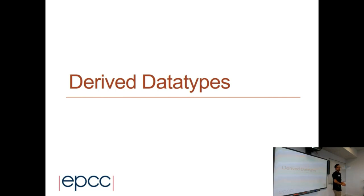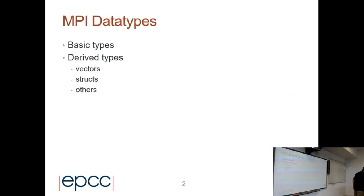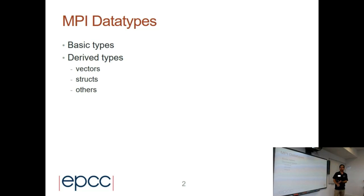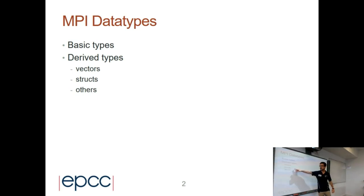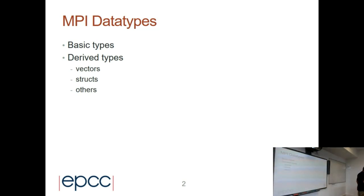Okay, let's continue with the MPI course. I give the last session of today, which is about derived data types. In MPI, you have seen that we have basic types: we have the integer, MPI int, MPI float, double, etc. But also we can create derived data types that are useful to define vectors, structures, and other data definitions.